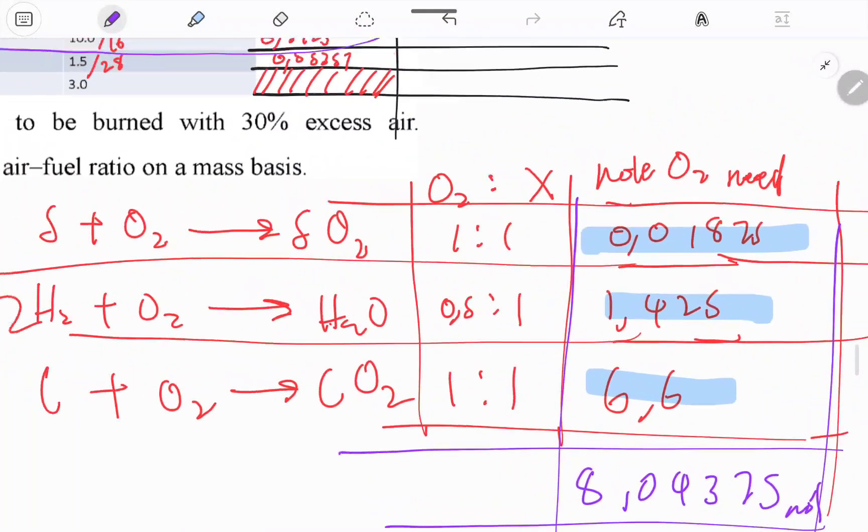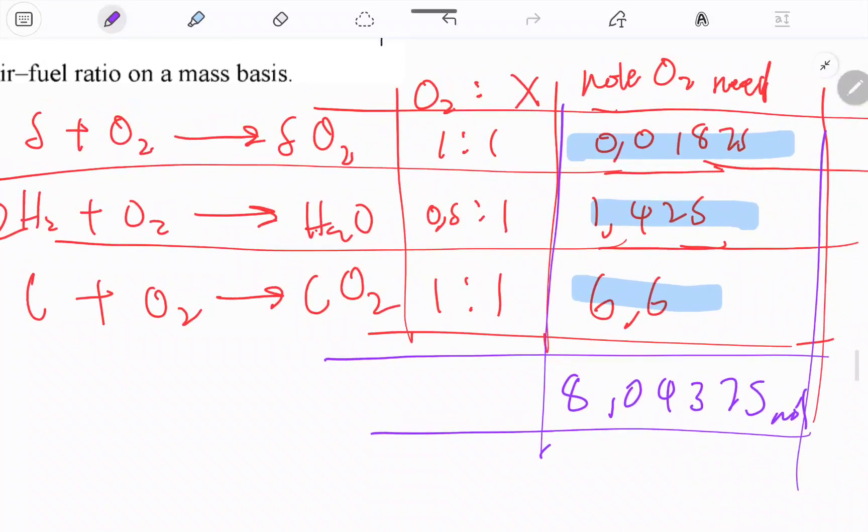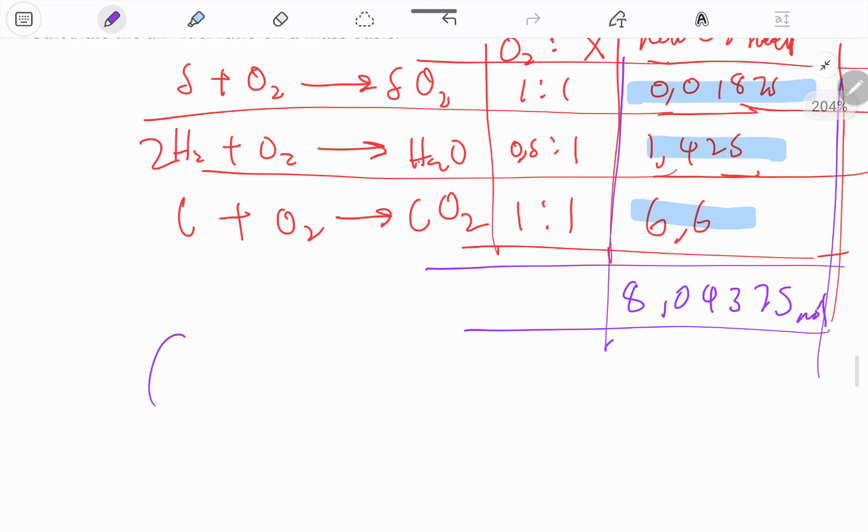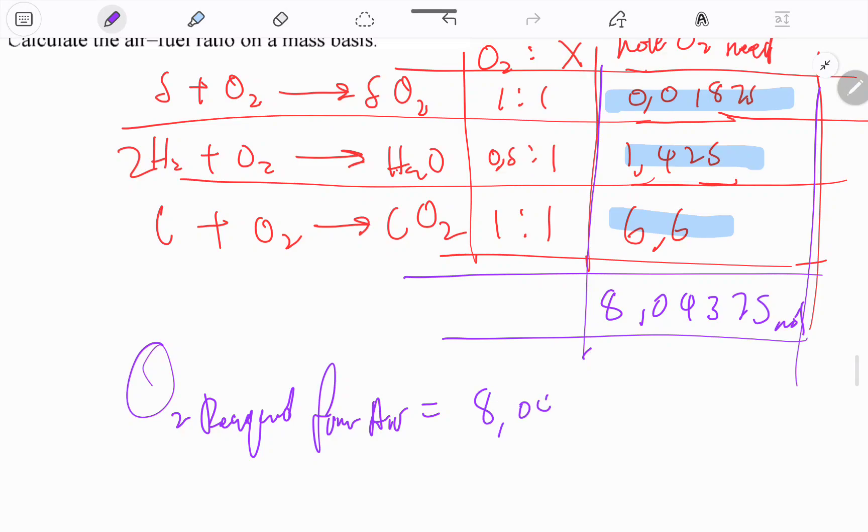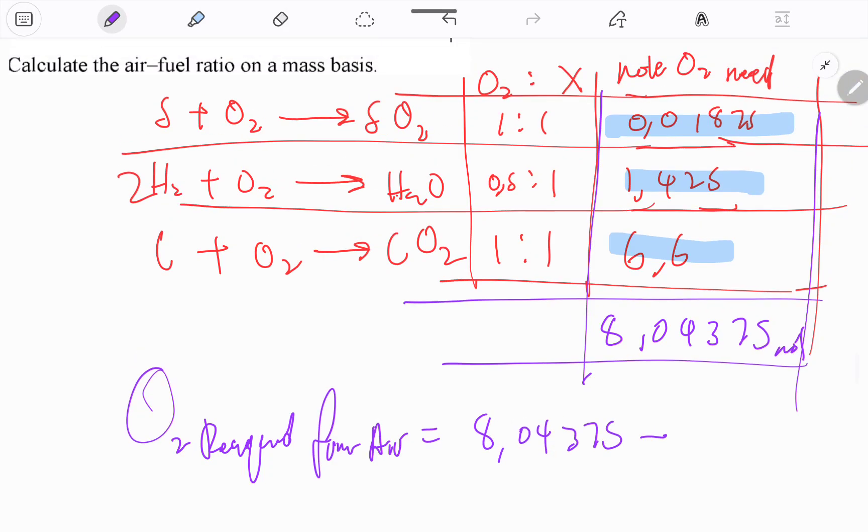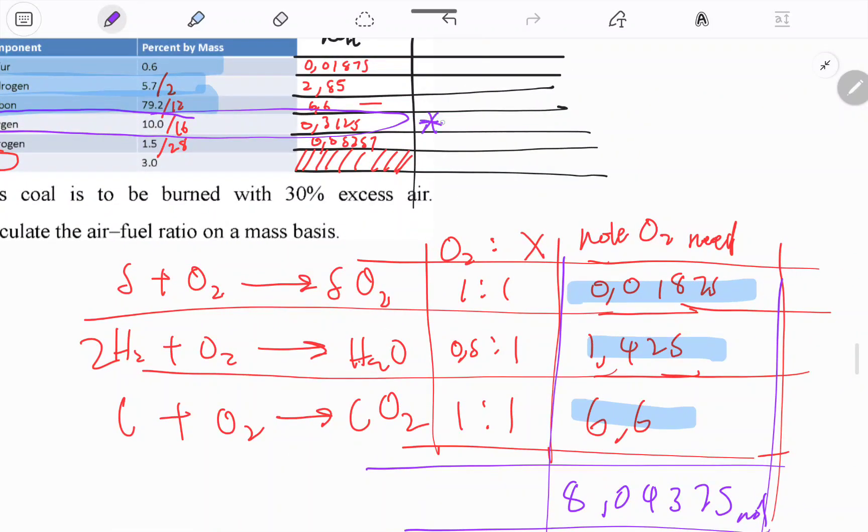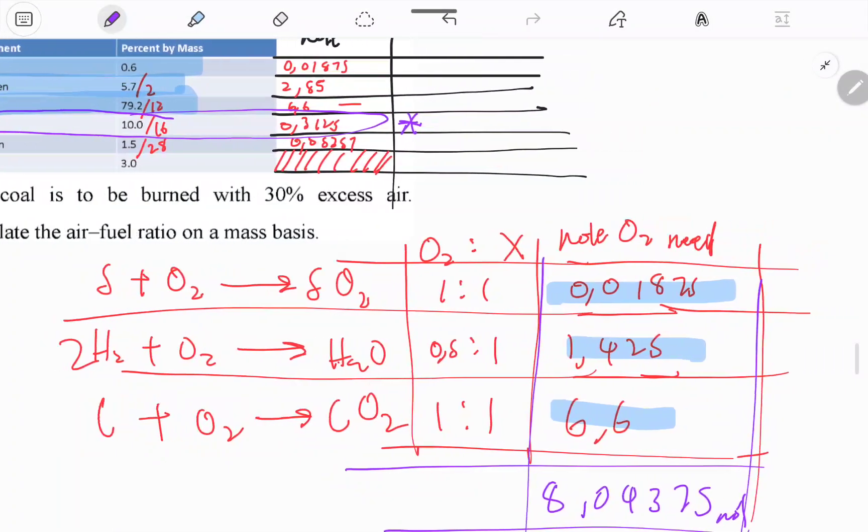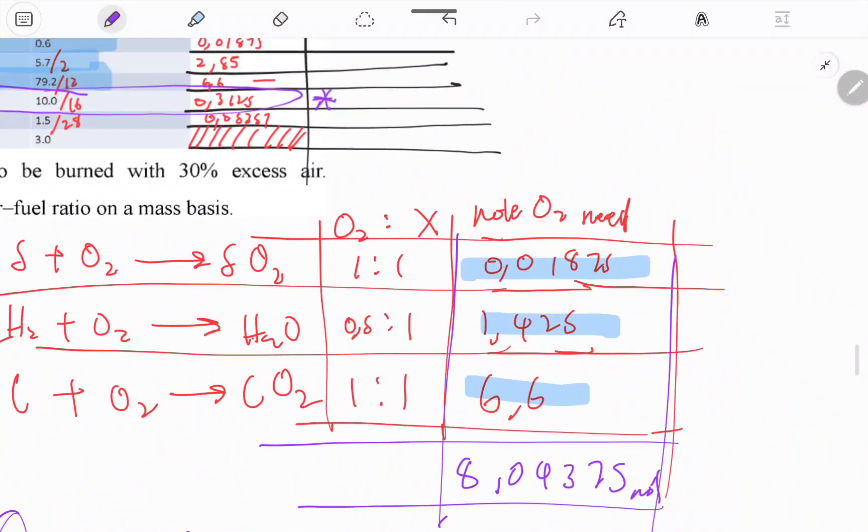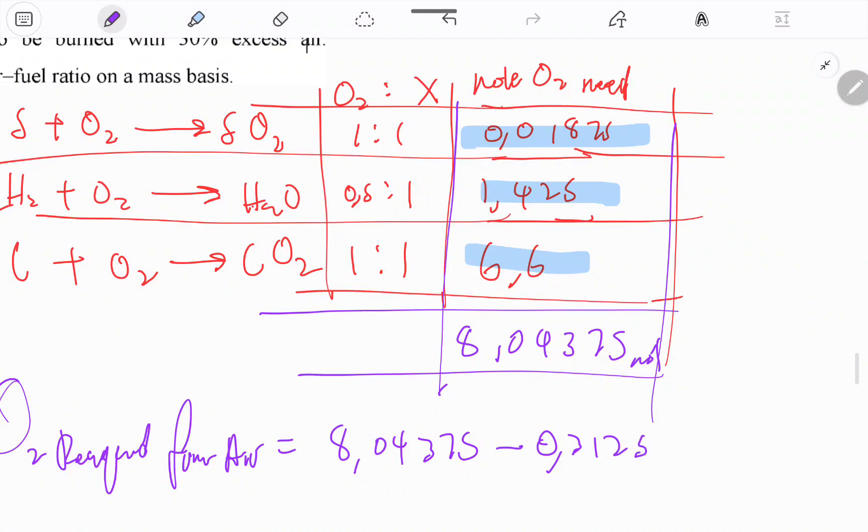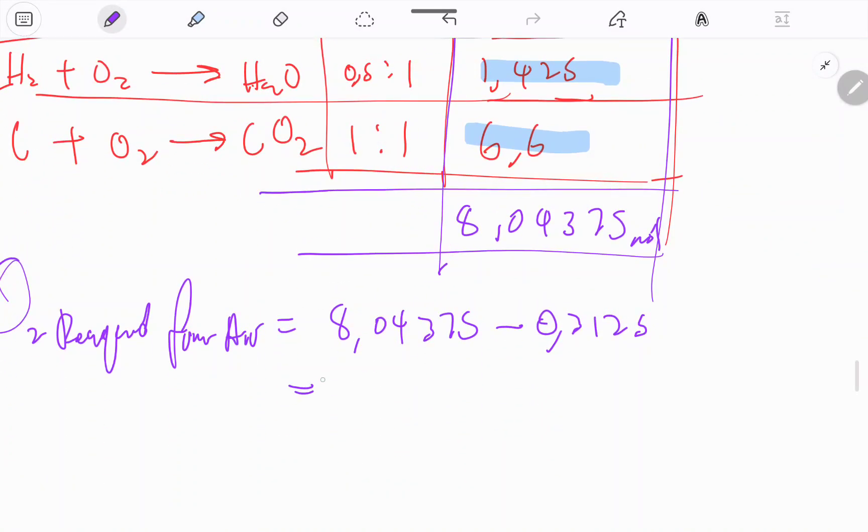If we add them, we're getting 8.04375. These are the number of moles needed to burn this coal. But this coal already came with its own oxygen here, so we don't really need all this. We need this much less.